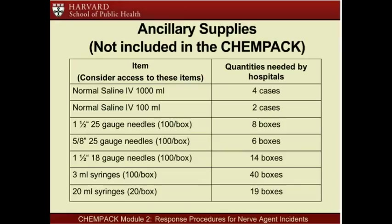When treating victims of a suspected nerve agent incident, hospitals will require several additional supplies not included in the ChemPAC containers. These are referred to as ancillary supplies, and recommended amounts of supplies are listed on this slide. Both host hospitals and non-host hospitals must have access to the quantities of ancillary supplies listed in the right-hand column.